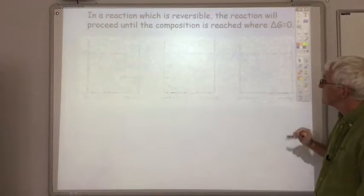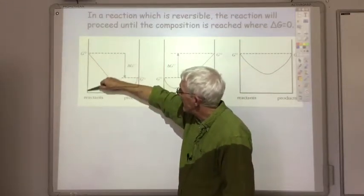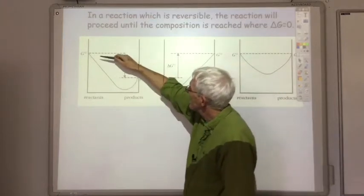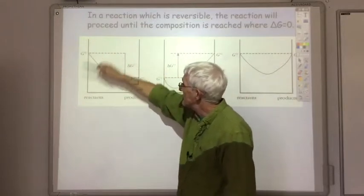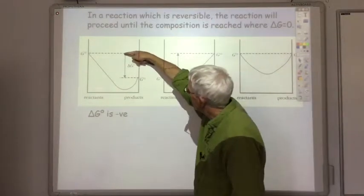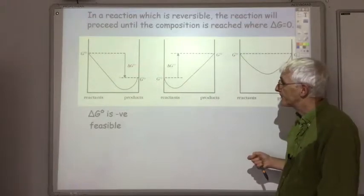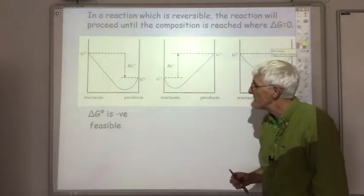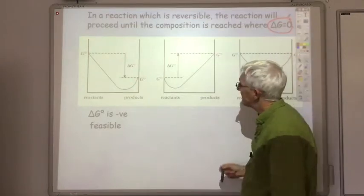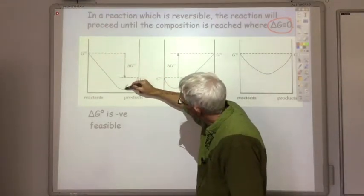There are three different situations you can get. In each graph, on the left hand side we start off with pure reactant and on the right hand side we've got pure product. In this first graph, the products have far less free energy than the reactants. So going from reactants to products, we see that the value of delta G-naught is negative — we've lost free energy — which means the reaction will be feasible. Because it's a reversible reaction, we're not in a situation where all the reactants turn into products. We want to find the spot where delta G equals zero, where G stops changing — that turning point.